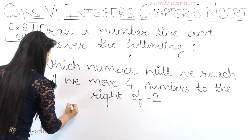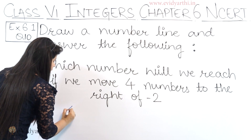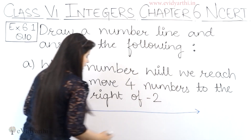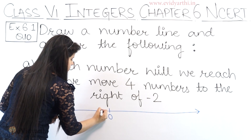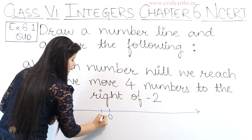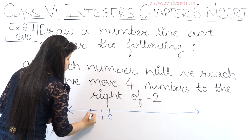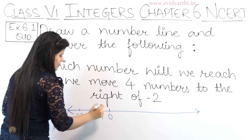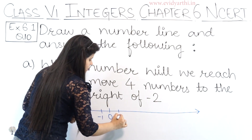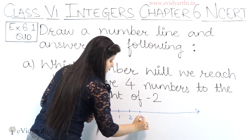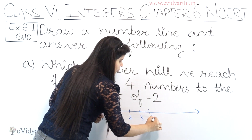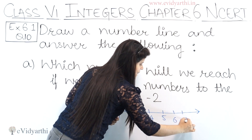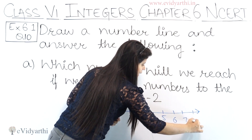First let's draw a number line. Let's take 0 here. This will be our minus 1, minus 2, minus 3, and this will be 1, 2, 3, 4, 5, 6, 7, 8.